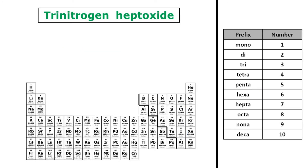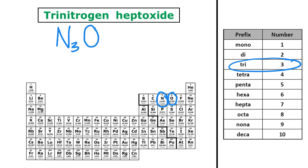Next we have trinitrogen heptoxide. So trinitrogen — symbol N — and tri is the prefix for three. And then heptoxide: O, that oxide is oxygen, and hepta is the prefix for seven. So trinitrogen heptoxide is N3O7.